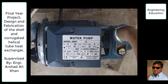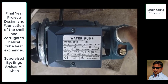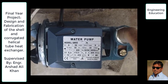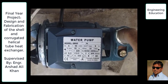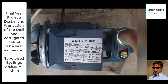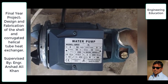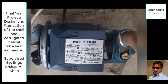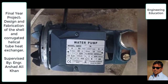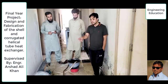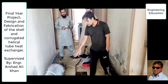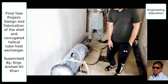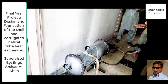Now we are going to explain our project specifications. First, we have a centrifugal type pump. The model of this pump is BQ60, the head of this pump is 35 meters, and the maximum supply voltage is 220 volts. Here we have the inlet and here we have the outlet. The components of the heat exchanger include the shell, and inside it are the baffles.